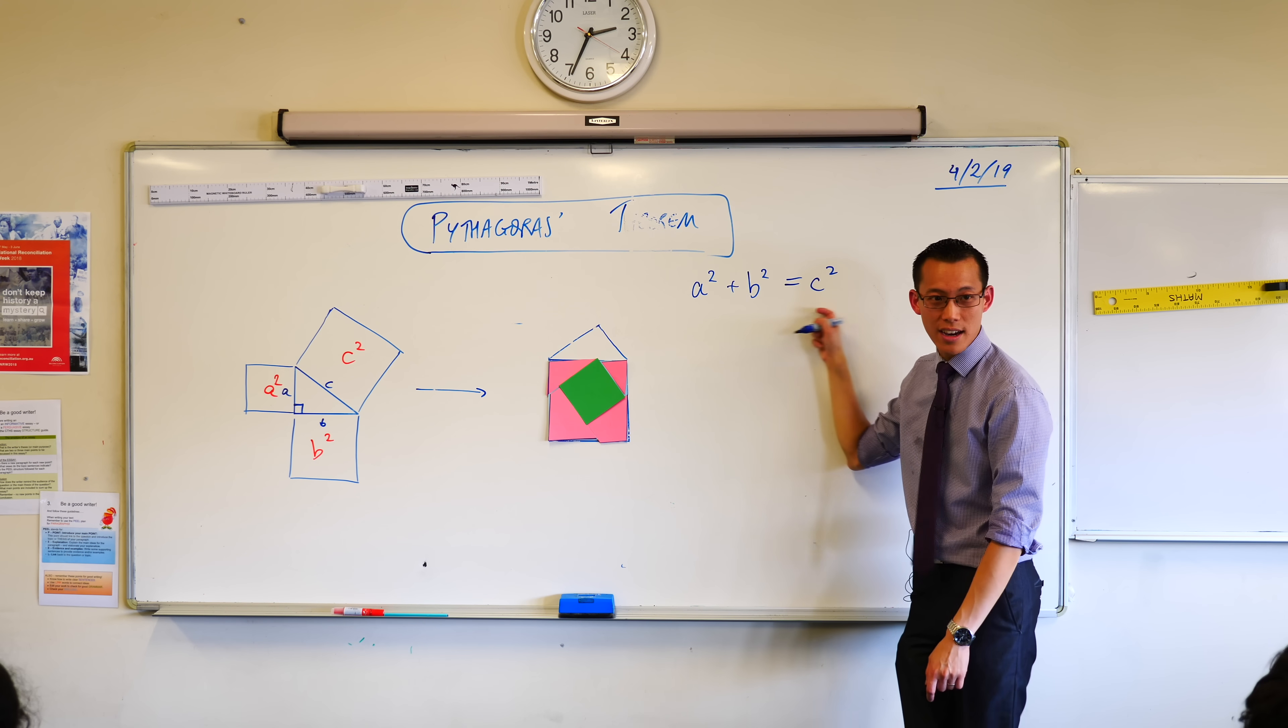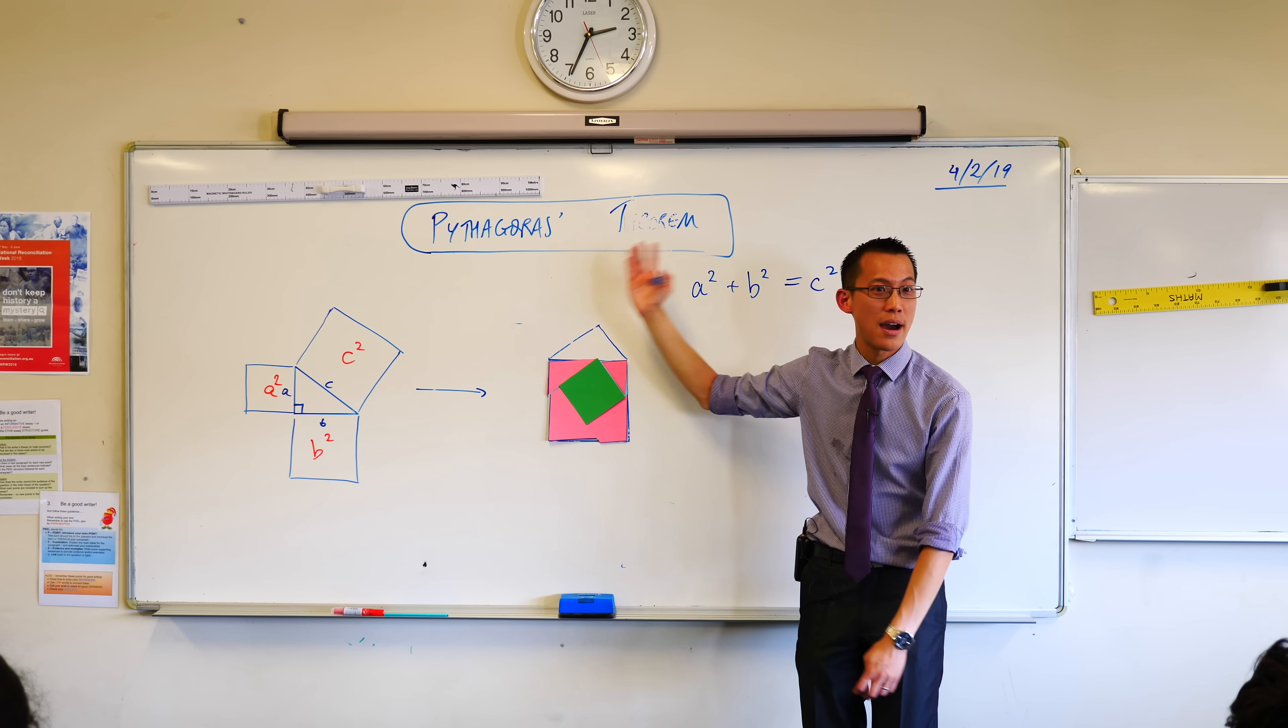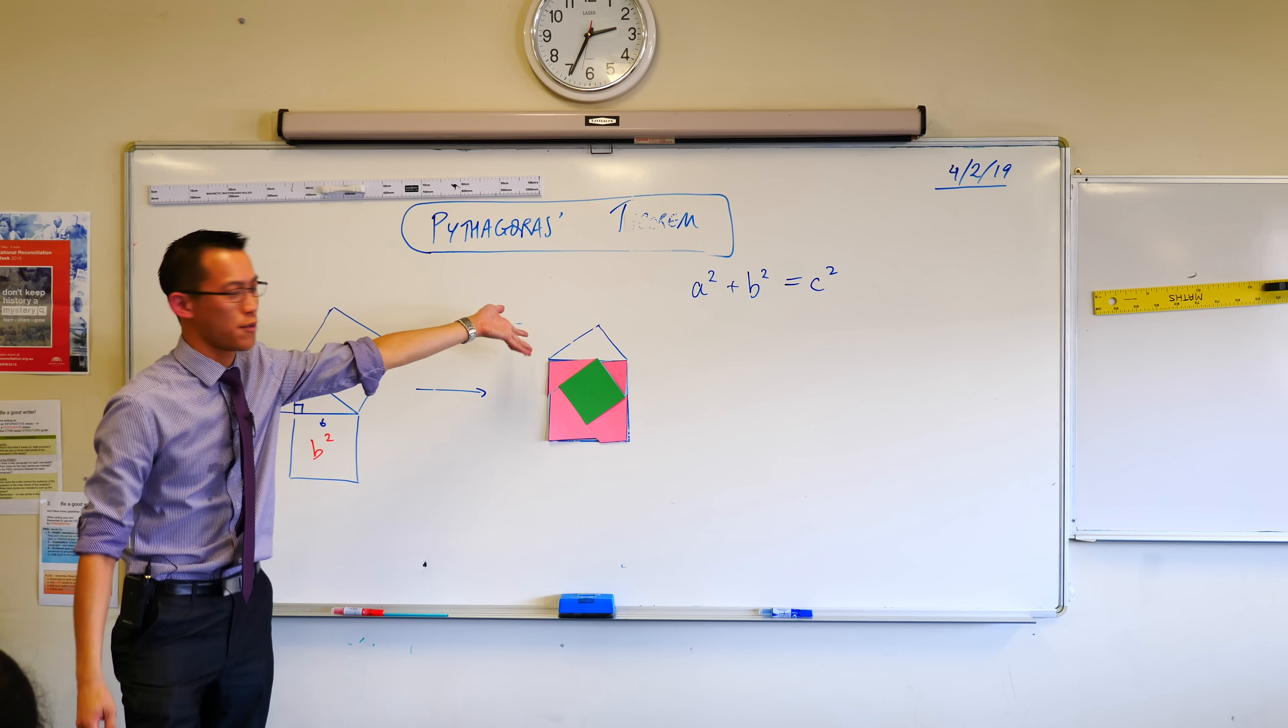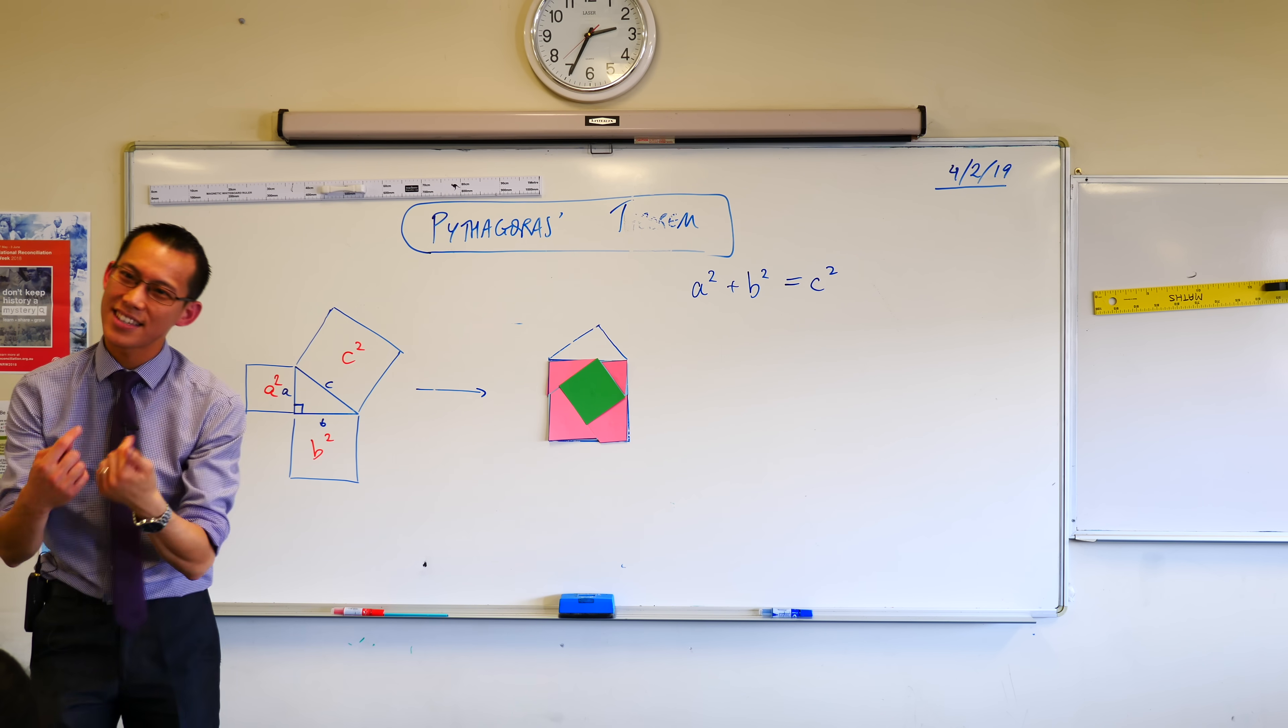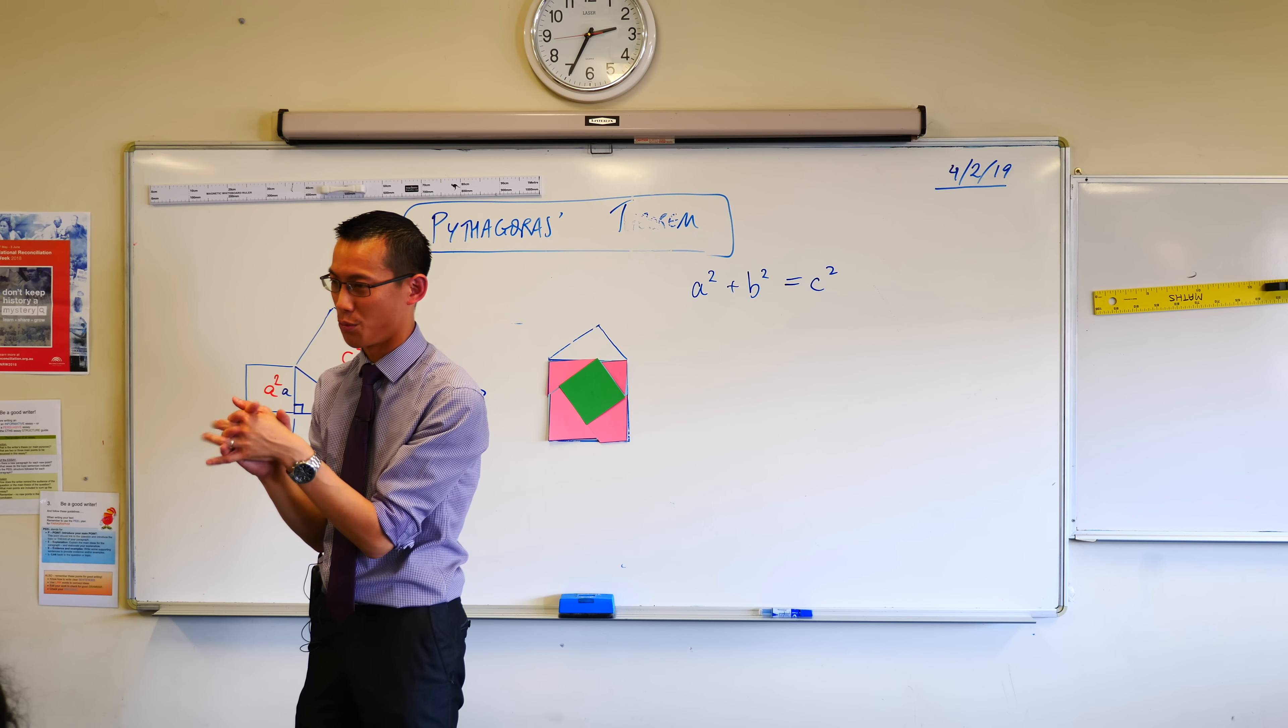This guy here, this relationship between the sides of a right-angle triangle, that's what we call Pythagoras' theorem. Now, here's the important thing. You might think, oh, Mr. Wu prepared this earlier, clearly, and so he knew it would work with his particular triangle, but it doesn't just work with my particular triangle. It will work with all of yours as well. That's why I asked you to draw all different ones.